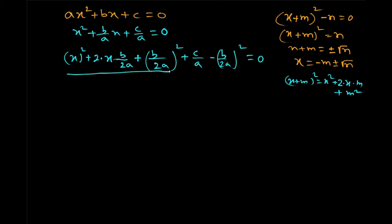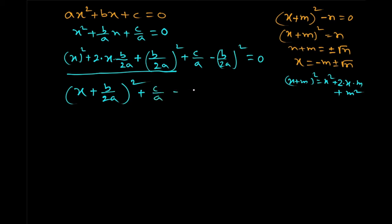Now these three terms — x squared, 2 into x into b by 2a, and b by 2a squared — form the square of x plus b by 2a. The extra terms are minus b squared by 4a squared and c by a, so x plus b by 2a, all squared, minus b squared by 4a minus c by a equals 0.